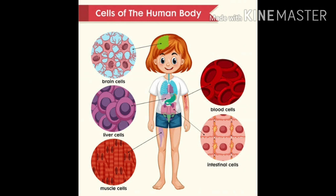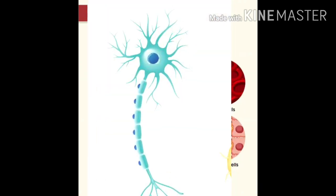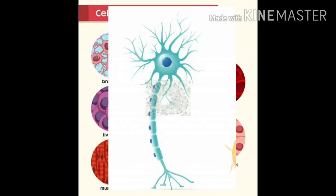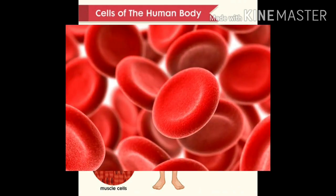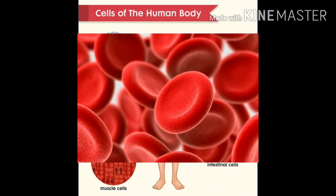There are different types of cells in all living organisms. For example, nerve cells, bone cells, muscle cells, blood cells, etc.